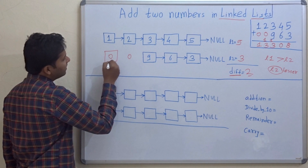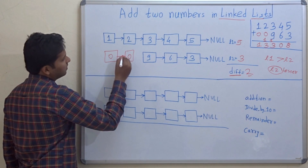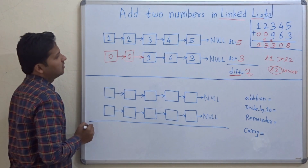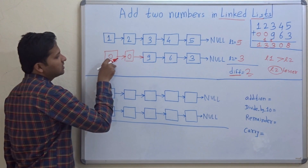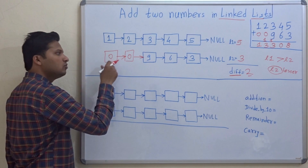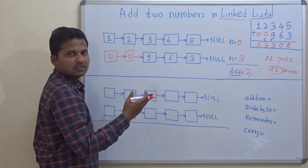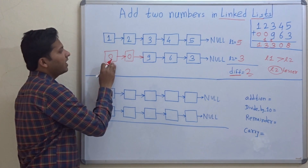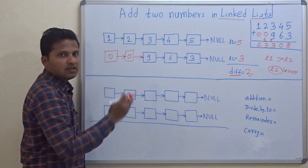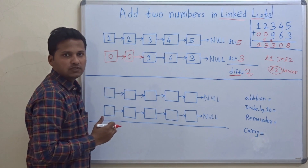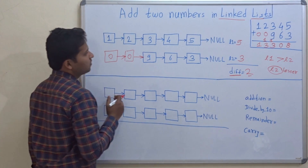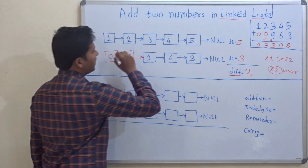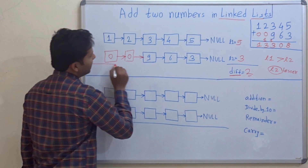You can understand how to add nodes to a linked list by watching videos on my channel. I have explained how to add nodes to a singly linked list in one of my videos. So as the difference is 2, we have added 2 zeros. Now let's add the numbers.